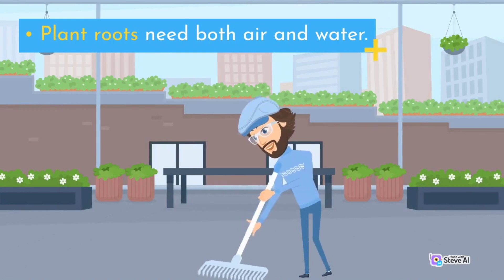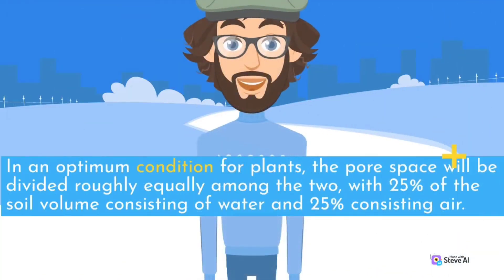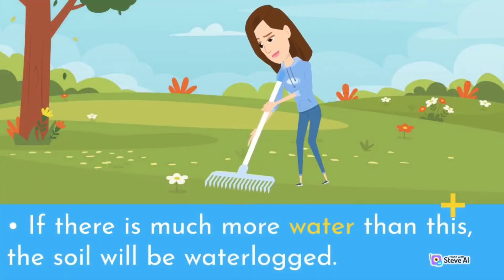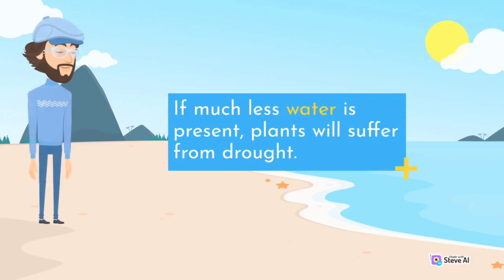Plant roots need both air and water. In optimum conditions for plants, the pore space will be divided roughly equally among the two, with 25% of the soil volume consisting of water and 25% consisting of air. If there is much more water than this, the soil will be waterlogged. If much less water is present, plants will suffer from drought.